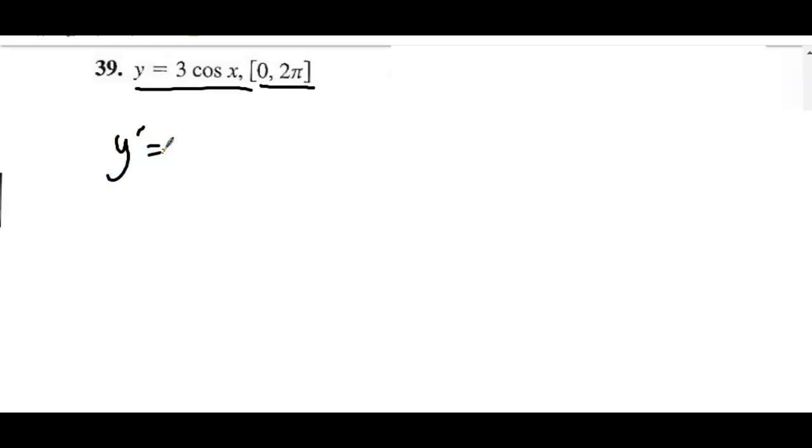The derivative of 3 cosine x, the 3 stays. The derivative of cosine is negative sine. I'm going to go ahead and put the negative in front of the 3. We're going to set that equal to 0, and then we're going to solve. So, divide both sides by negative 3, and you get this. And then we have to ask ourselves, where does sine of x equal 0?